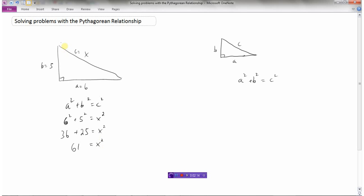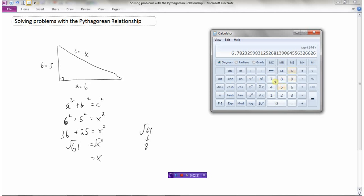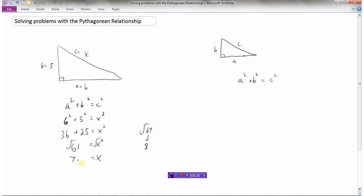And now we have the area of the square on the hypotenuse. So to get x, we need to square root both sides. The square root of 61. Well, I know that the square root of 64 is 8. So this is going to be a little bit less than 8. But let's be accurate. Let's go to the calculator and figure out what is the square root of 61. So 7.8. So the length of the hypotenuse, the missing side is 7.8 units.